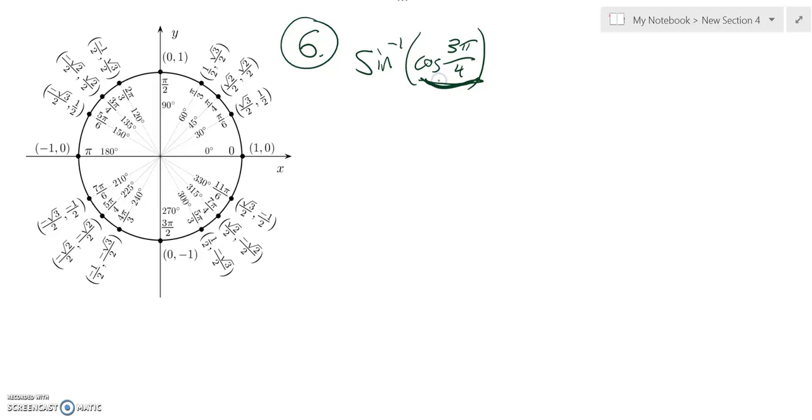Cosine of 3 pi over 4. So 3 pi over 4 is right here. And so cosine is width. So the cosine here is negative root 2 over 2. Right, I input the angle, out comes a ratio.